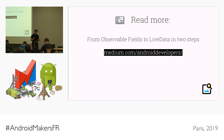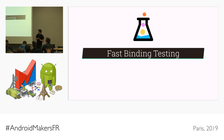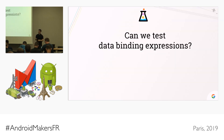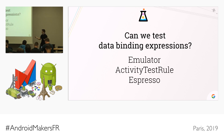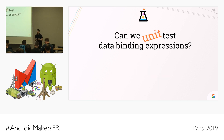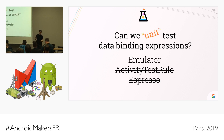My favorite topic here is fast binding testing. Can we test data binding expressions? You can start an emulator, fire up an activity, and use a UI testing framework to navigate around until you have coverage of those expressions — but this is quite slow. The real question is: can we unit test data binding expressions? Kind of. We need an emulator so it's not a pure unit test, but we won't need to start an activity and we won't need Espresso to navigate around.